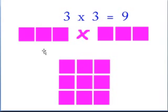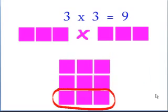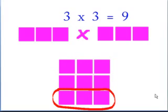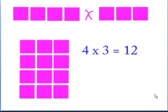Let's take a look at what that means graphically. Here we have 3 times 3 — just one group of 3 added to one group of 3 added to one group of 3. One group of 3 plus one group of 3 plus one group of 3 is the same thing as 3 times 3, and that equals 9.